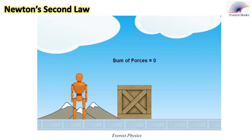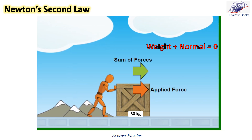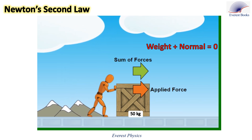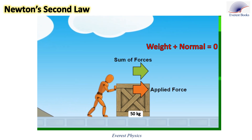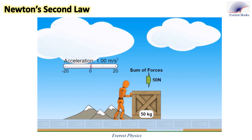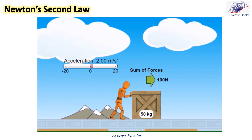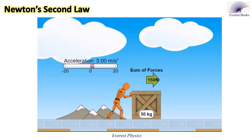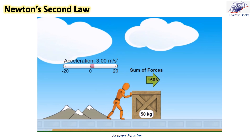Let's study Newton's second law. In this PHET simulation, the force F exerted by a man on the box is the net force acting on the box, because the weight and the normal force cancel each other out. The box has a mass of 50 kilograms. For F equals 50 newtons, the box moves with an acceleration of 1 meter per second squared. As F increases to 100 newtons, the acceleration increases to 2 meters per second squared. For F equals 150 newtons, the acceleration further increases to 3 meters per second squared.